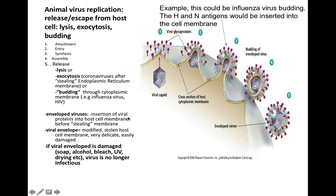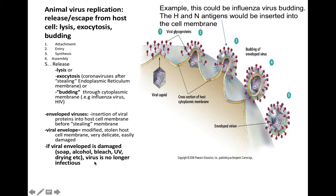Envelope viruses insert their viral proteins into the host cell membrane, so the viral envelope is modified host cell membrane — it's been changed by the virus inserting those proteins. Anything that damages the viral envelope inactivates the virus. The viral envelope is basically cell membrane, fluid mosaic model, consistency of olive oil — very delicate. So many things can damage it: soap, alcohol, bleach, UV, sunlight, drying. Good old soap will destroy the envelope of coronavirus and influenza virus. If the adhesins can no longer function, the virus is no longer infectious.